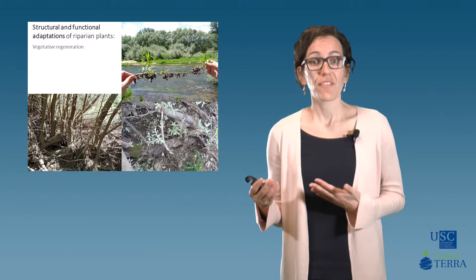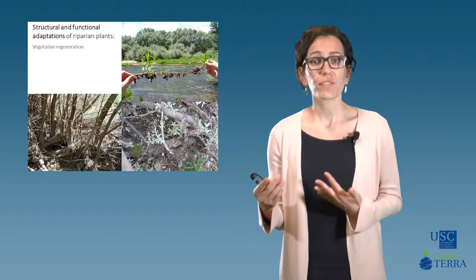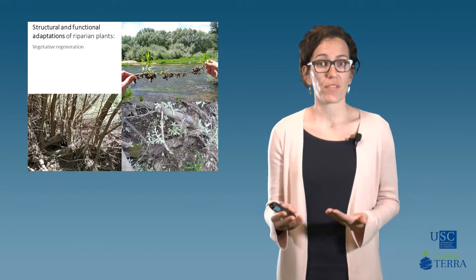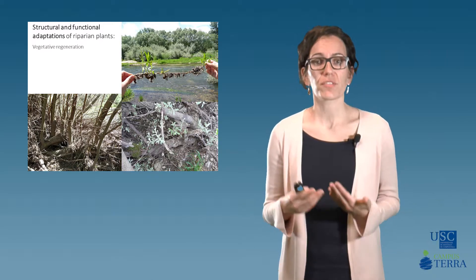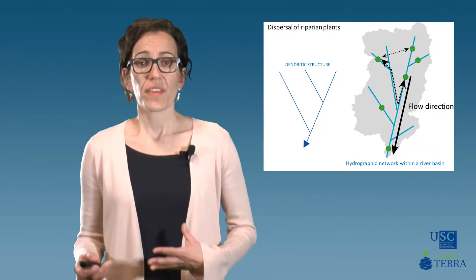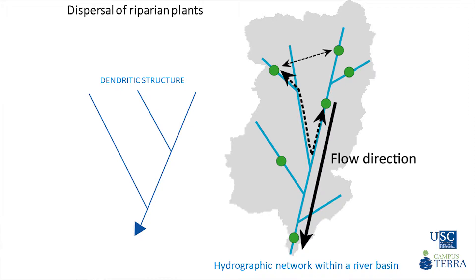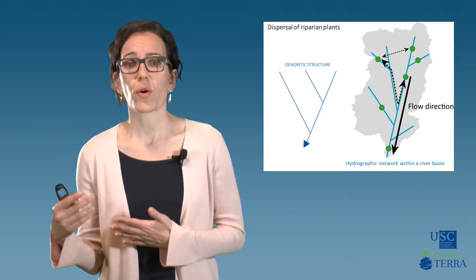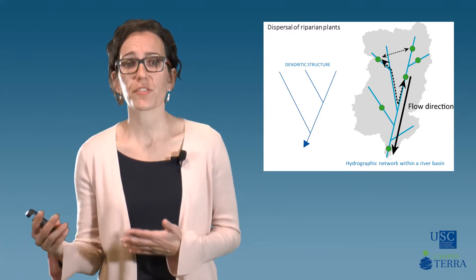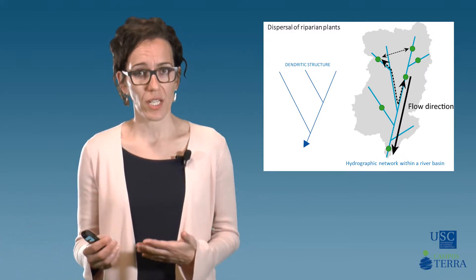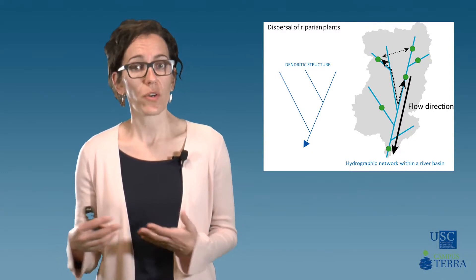Understanding life history strategies in riparian vegetation is fundamental if we are to preserve, manage or recover degraded riparian areas. Within a river basin, riparian vegetation is distributed along the hydrographic network, which typically shows a dendritic spatial structure. This spatial arrangement implies that movement of organisms, material or energy is primarily restricted to the physical network, which forms ecological corridors.